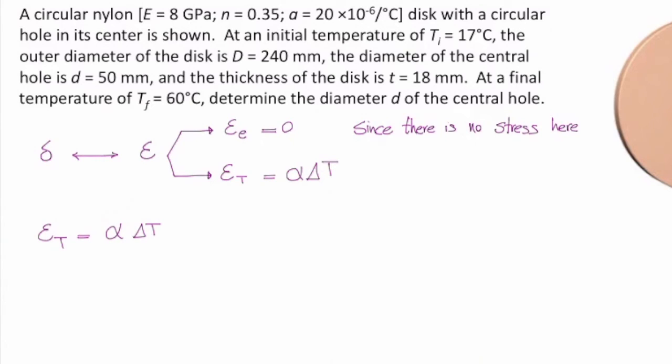So let me do the calculations. Thermal strain would be alpha times delta T. Alpha is 20 times 10 to the minus 6, and delta T is 60 minus 17. Remember, I'm not using either the final temperature or the initial temperature. I work with change in temperature, which is 60 minus 17, and that gives me a strain equal to 860 times 10 to the minus 6.